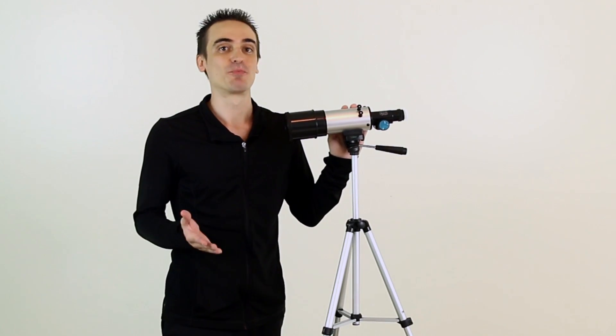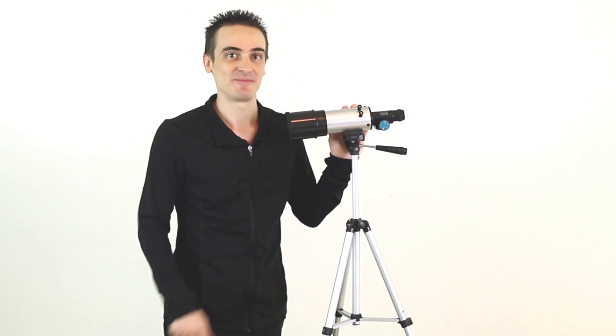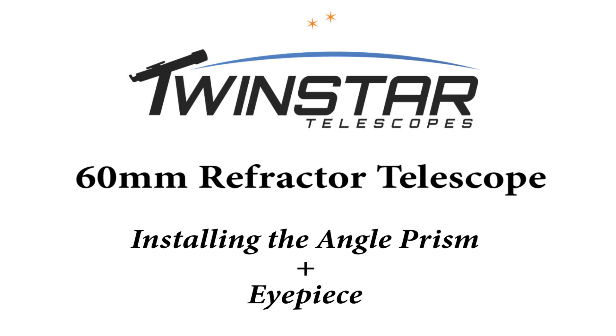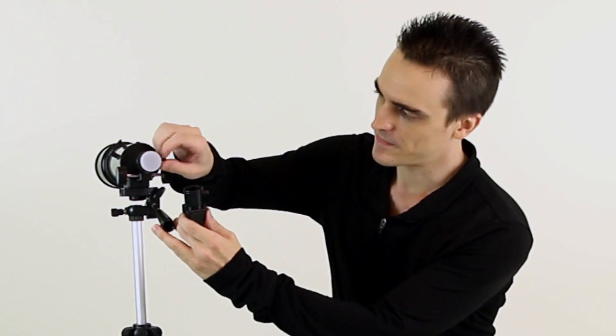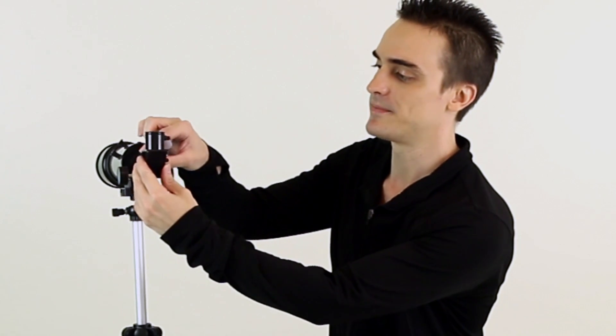Now it's time to insert the angle prism and the eyepieces for step three. We'll be inserting the angle prism here into the back of the telescope. Go ahead and start loosening the screw that's right there. When you've done that, go ahead and take out your protective cap. Then you simply replace the angle prism inside and tighten your screw back up like so.